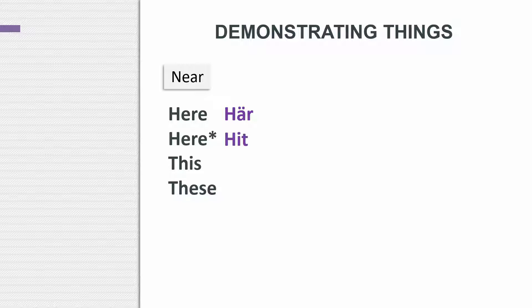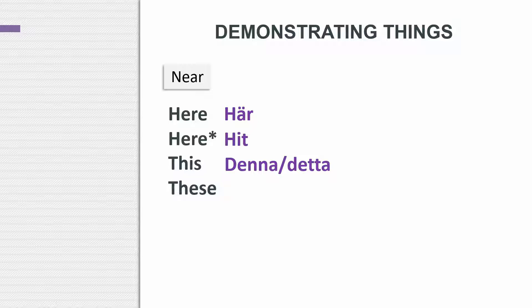To say 'this', there are two words: denna or detta. So, denna bil, detta hus — en bil, ett hus. So it's related to en or ett. To say 'these' in plural, you would say dessa — dessa bilar, dessa hus.